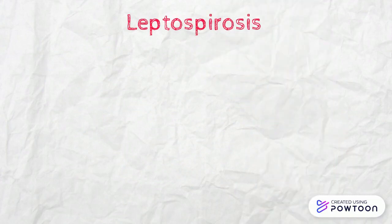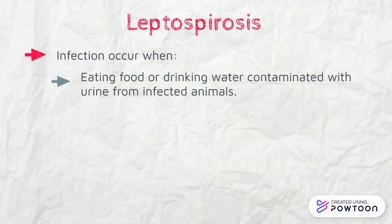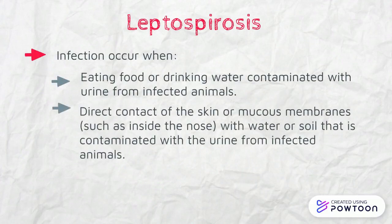Next is leptospirosis. The infection occurs when eating food or drinking water contaminated with the urine from infected rodents, or through direct contact of the skin or mucous membranes — such as the inside of the nose — with water or soil contaminated with the urine from infected rodents.